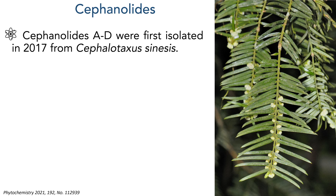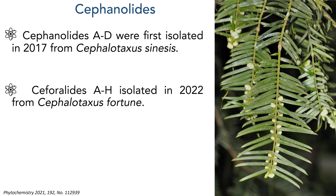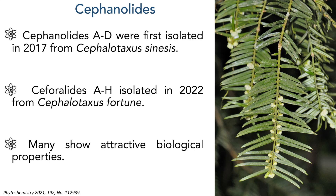The cephanolides A–D were first isolated in 2017 from Cephalotaxis sinensis, while the cephalolide compounds were isolated in 2022 from Cephalotaxis fortunei. The cephalotene diterpenoids is quite a rich group of compounds with over 110 members isolated, many of which show potent anti-tumor activities.